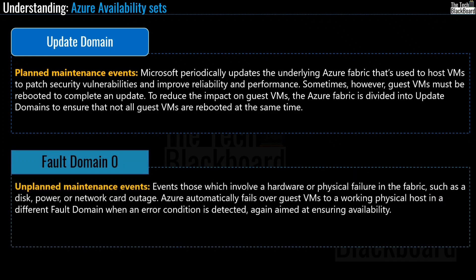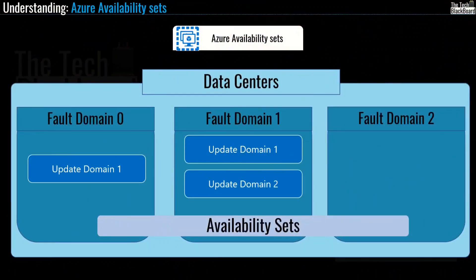A fault domain covers unplanned maintenance events — hardware or physical failures such as a disk, power or network card outage. Azure automatically fails over guest virtual machines to a working physical host in a different fault domain when an error is detected. Each availability set can be configured with up to 3 fault domains and 20 update domains. When more than 5 virtual machines are configured within a single availability set with 5 update domains, the sixth VM is placed into the same update domain as the first, the seventh into the same as the second, and so on.